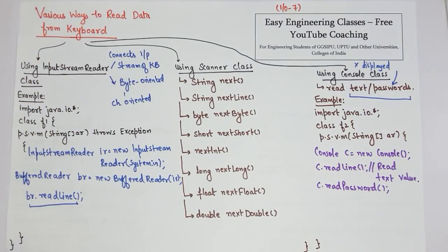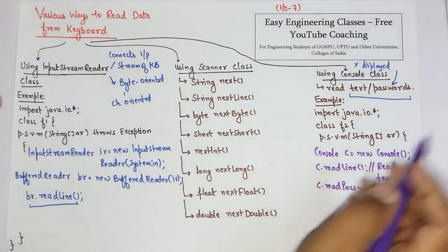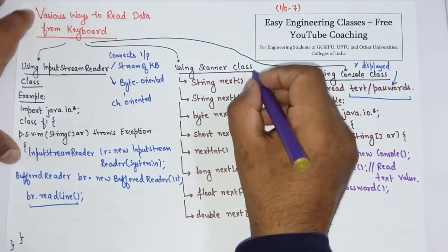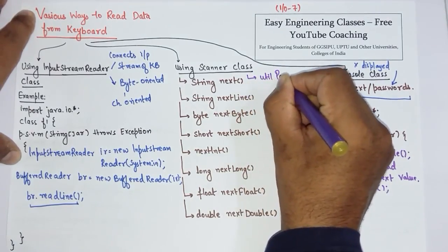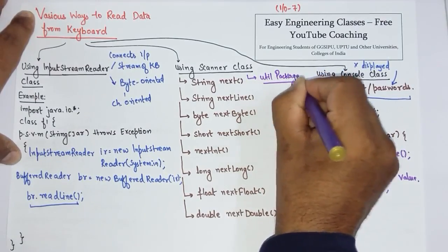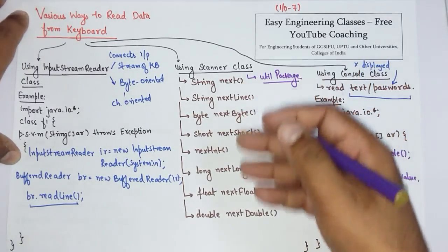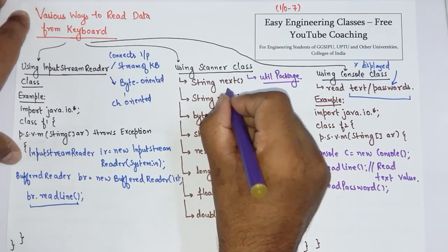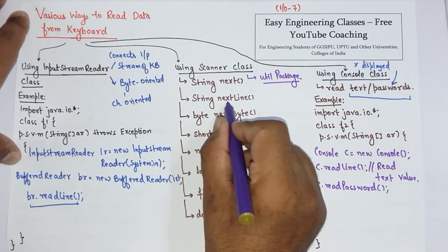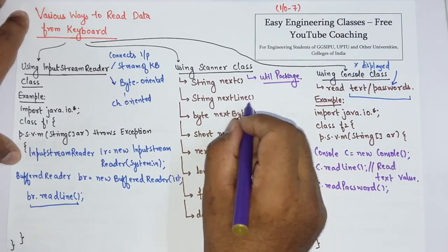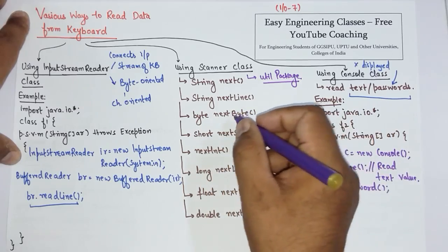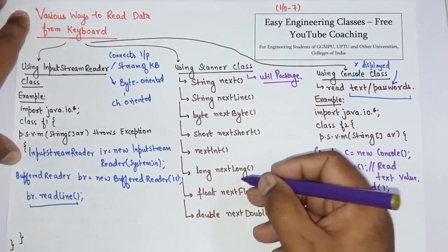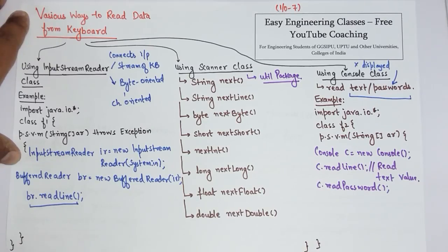The third way is using the Scanner class, which has already been covered in earlier lectures. Scanner is a very important class and is present in the util package of Java. Using Scanner, you can read characters, integers, floats, and doubles. There are many methods available: next() returns the next token, nextLine() moves to the next line and returns a String, and nextByte(), nextShort(), nextInt(), nextLong(), nextFloat(), and nextDouble() return their respective types.